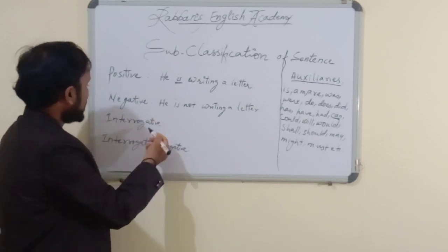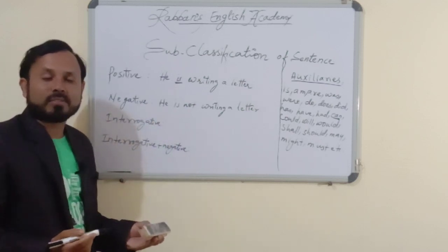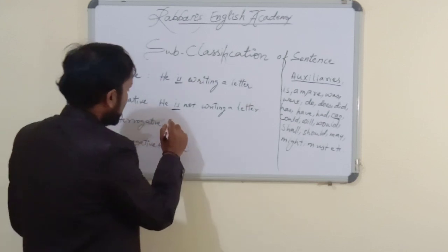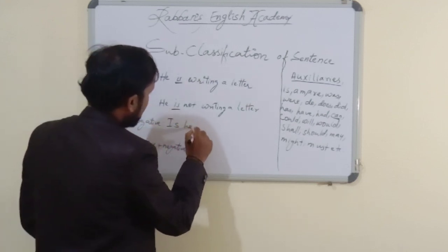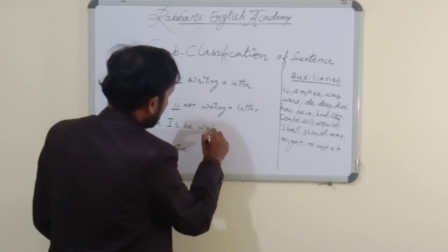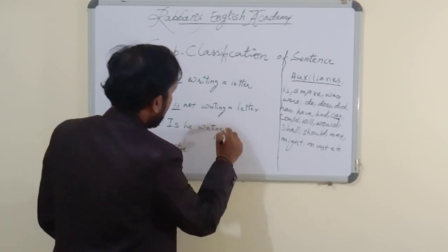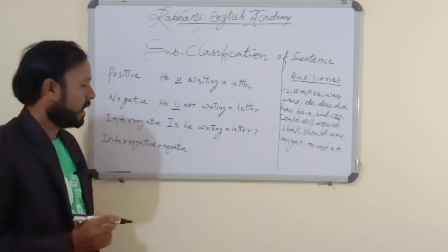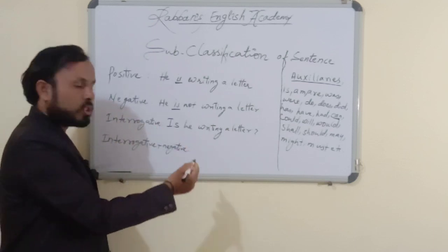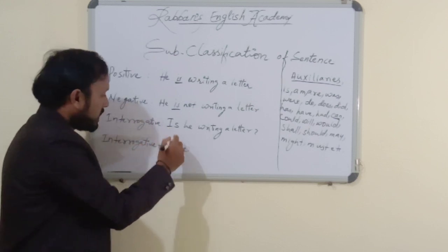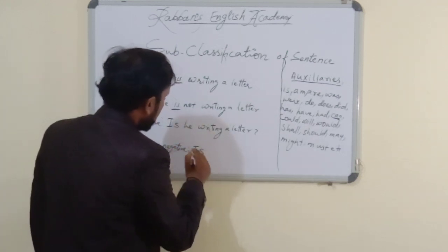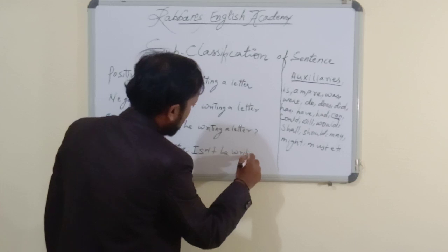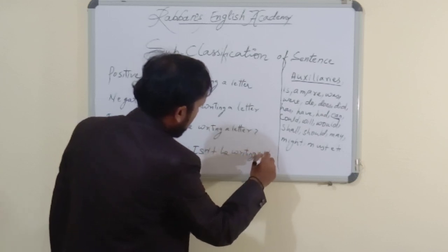Then how to make interrogative sentence — that is, an asking or question sentence? Auxiliary will come first. Which is the auxiliary? 'Is.' Write: 'Is he writing a letter?' — and put a question mark. You should not use 'not' here. Then interrogative negative: auxiliary 'is' is already used. You can write 'Isn't he writing a letter?' or in full form: 'Is he not writing a letter?'